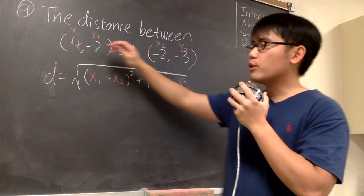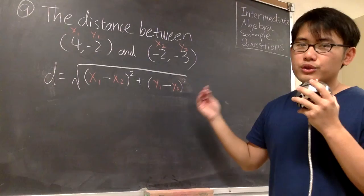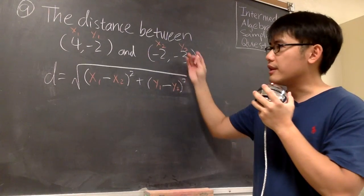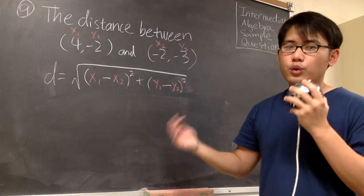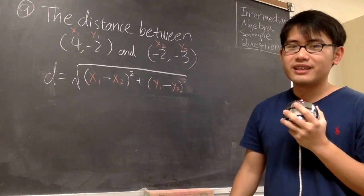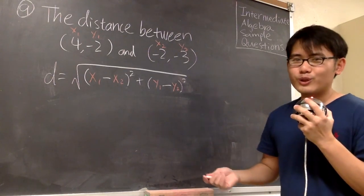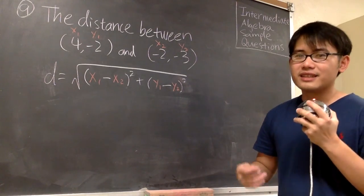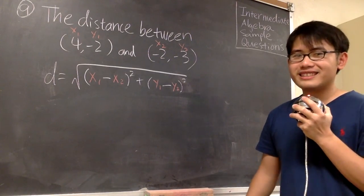Here we have all the numbers being labeled already, so we just have to plug the numbers into the formula and work out the computation. We have to remember this formula when the problem is asking us to find the distance between two points.